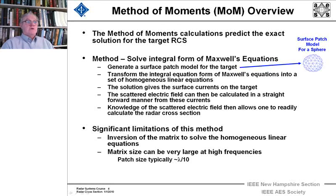But we're stuck with this integral equation form of Maxwell's equations. And what we're going to do is we're going to transform the integral equation form of Maxwell's equations into a set of homogeneous linear equations. And the set will be of size n, where n is the number of patches. And the solution will give the surface currents on the target. And the scattered electric field can then be calculated in a straightforward manner from these currents. And knowledge of the scattered electric field then allows one to readily calculate the cross section.